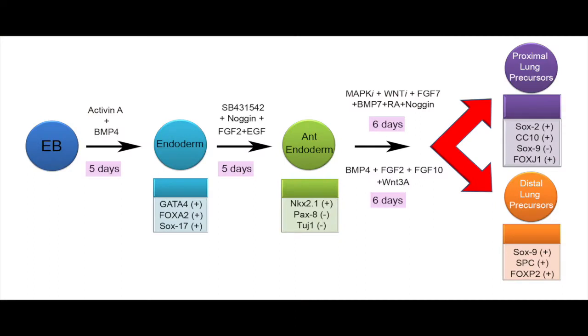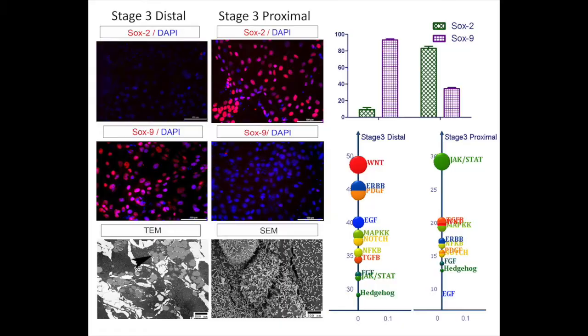With this aim, we first differentiated human-induced pluripotent stem cells into distal and proximal lung precursors using a specific combination of growth factors as well as small molecules in a stepwise manner, thus recapitulating in vivo milestones of lung development. The distal and proximal lung precursors were further authenticated using stage-specific markers at mRNA and protein levels, as well as by electron microscopy.